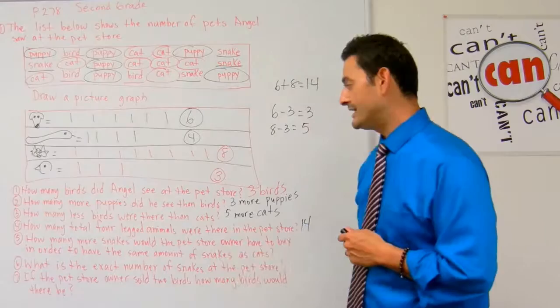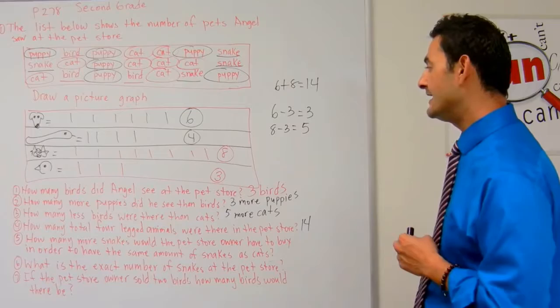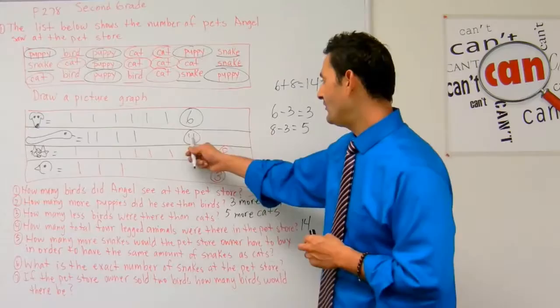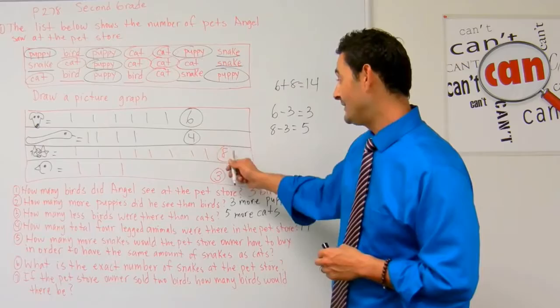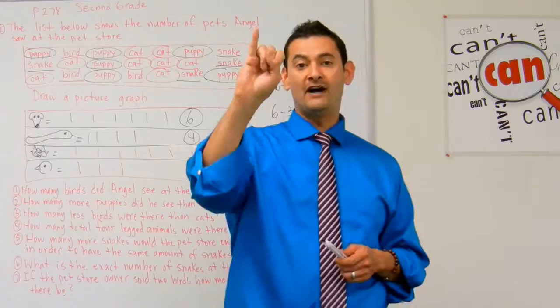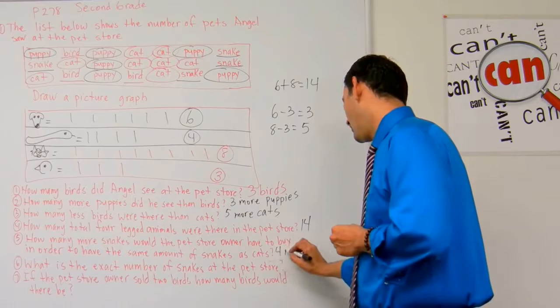Number five reads: how many more snakes would the pet store owner have to buy in order to have the same amount of snakes as cats? Right now he's got four snakes and needs eight total to match the cats. Counting up from four: five, six, seven, eight — he needs four more snakes.